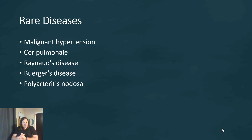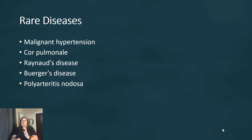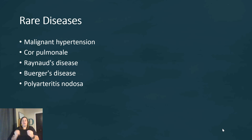Polyarteritis nodosa is a vasculitis — an inflammatory condition — that can cause necrotizing lesions. It has an autoimmune basis, meaning the immune system attacks the body's own blood vessels, causing inflammation and necrotic lesions. These rare diseases are not commonly seen but are worth brief mention.